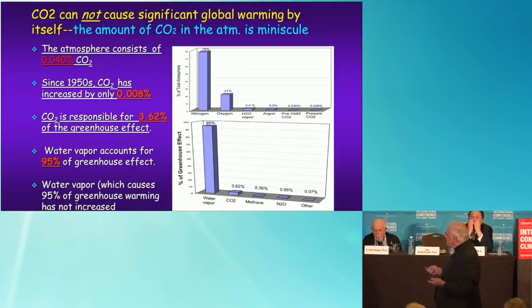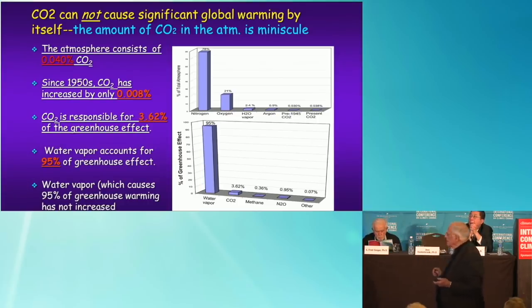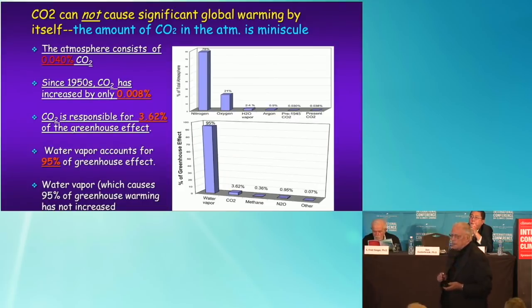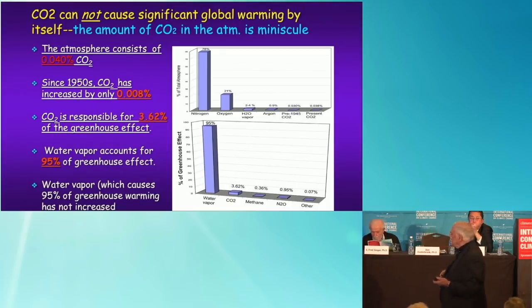The really telling argument is that since 1945–1950, which is the period supposedly of global warming, the amount of CO2 in the atmosphere has increased by only 8/1,000ths of 1%. Taking the level in 1950 as baseline, the absolute increase in CO2 in the atmosphere is just 8/1,000ths of 1%. And that isn't going to do very much.